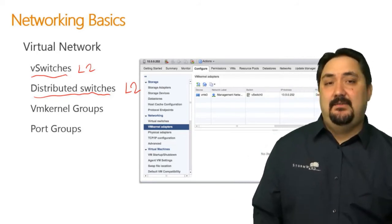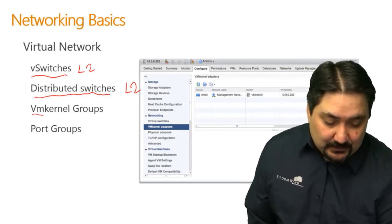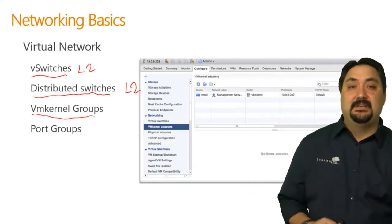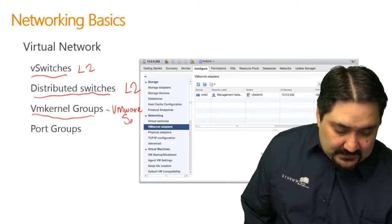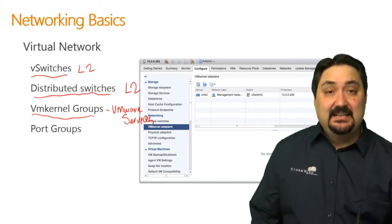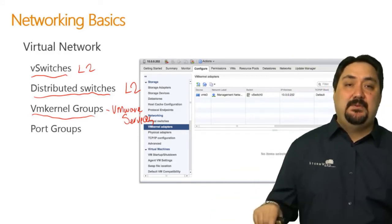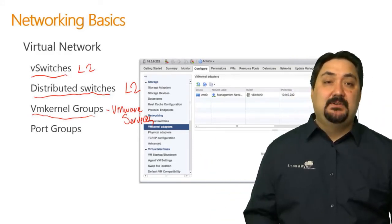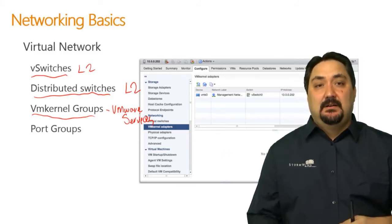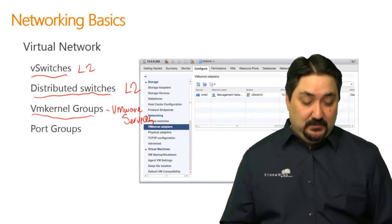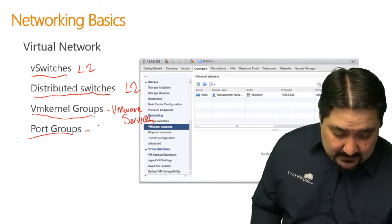A distributed switch can be pushed to multiple hosts, but it's still a layer 2 switch — just think of it as a fancy layer 2 switch. Next, we have VM kernel groups. This runs VMware services — that's all it does. It's the connectivity for VMware services so they can communicate with each other, vCenter Server, or agents placed on other hosts.